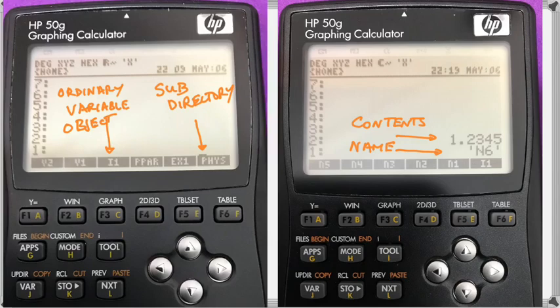Now when we type whatever we type and press enter, it goes into line one. And then if we type something else and press enter, it pushes whatever was in line one up to line two. So whatever is the most recently entered on the calculator will be in line one, and as we enter more, they all get pushed up to higher and higher line numbers.